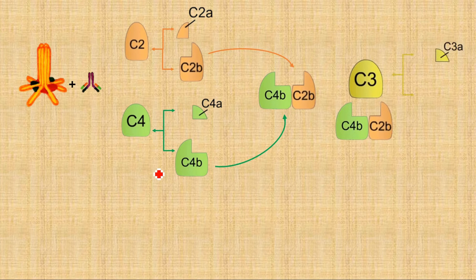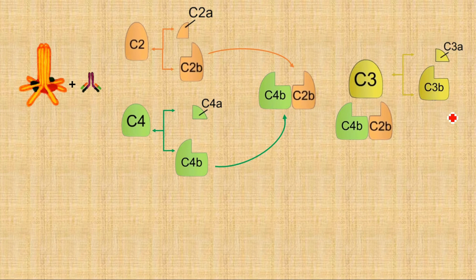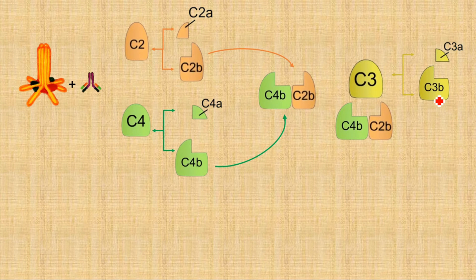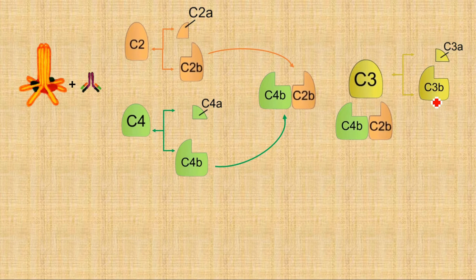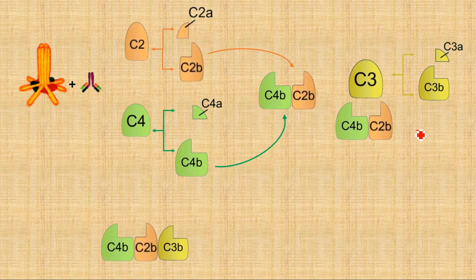The C3 convertase complex has the ability to cleave C3 into its constituent subunits C3a and C3b. When a lot of C3b accumulates on the surface of bacteria, it attracts a lot of macrophages and other phagocytes to the spot. They then engulf and destroy the bacteria by the process of phagocytosis. That is the number one option — opsonization.